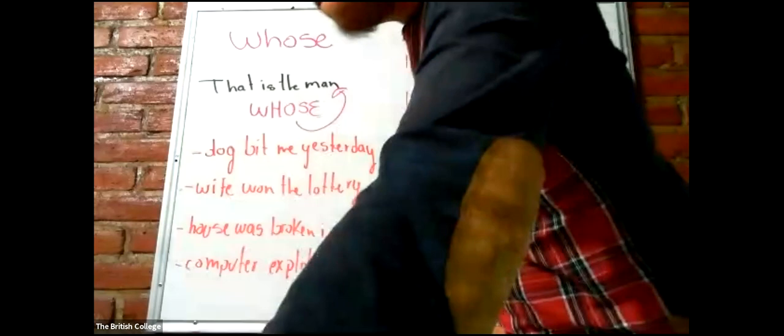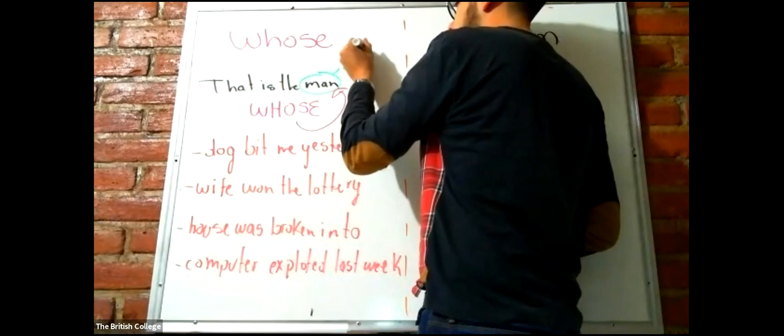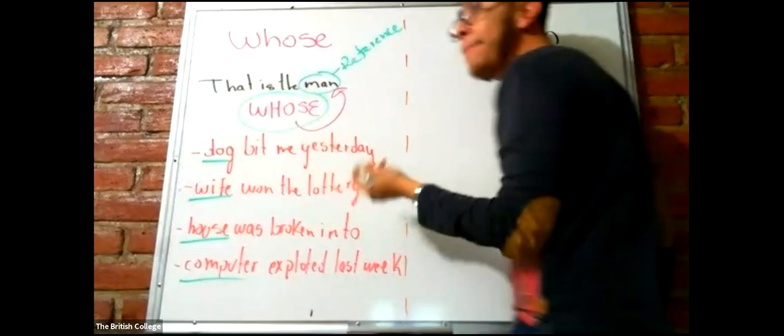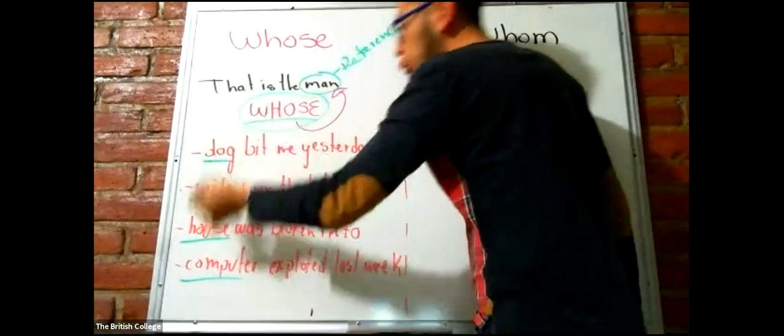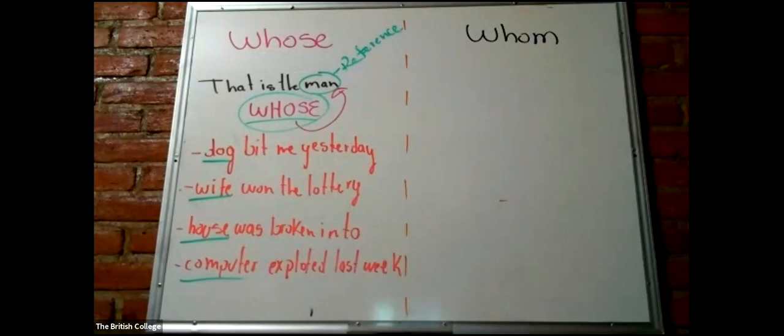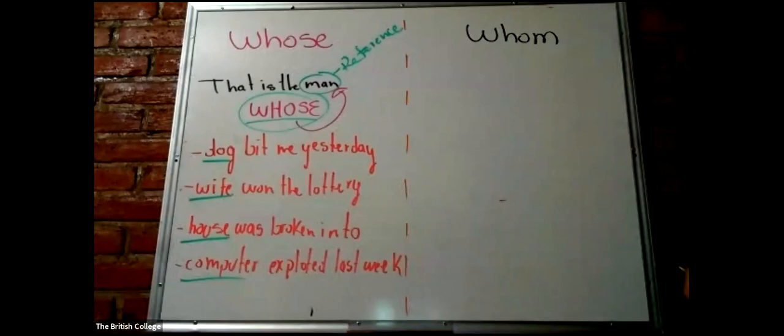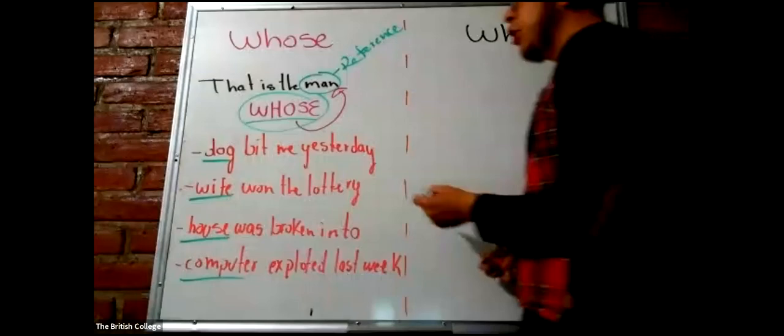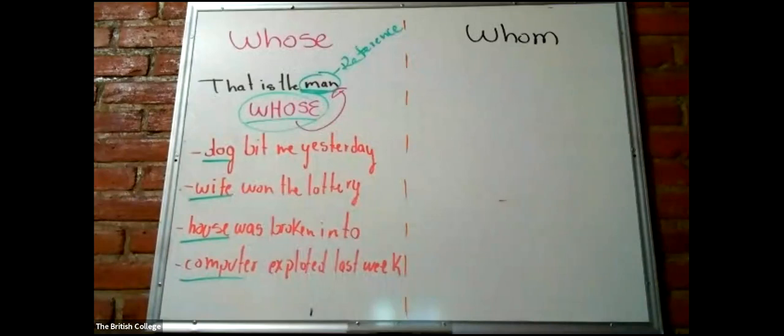In these four sentences, students, the man is only a reference. My subjects are the dog, the wife, the house, and the computer. That is the man whose pertenencia. Ese es el hombre de quien su perro, su esposa, su casa, y su computadora. Pero acá yo me refiero a pertenencia. That is the man whose dog beat me yesterday. Ese es el hombre de quien su perro me mordió ayer. Dese cuenta, chicos, que el sujeto va después de whose. Antes de whose es una referencia.